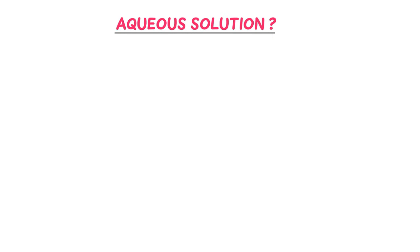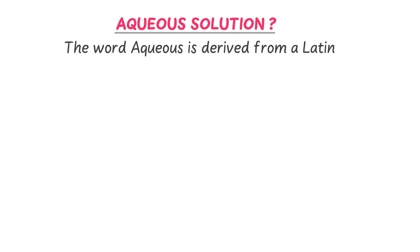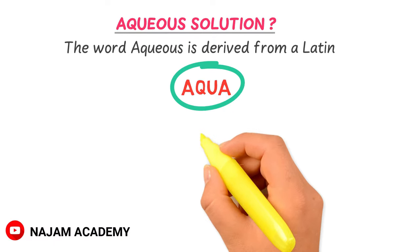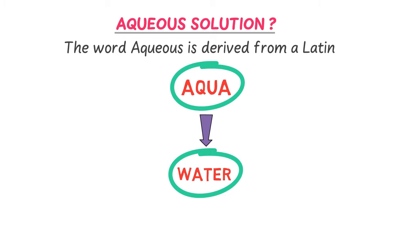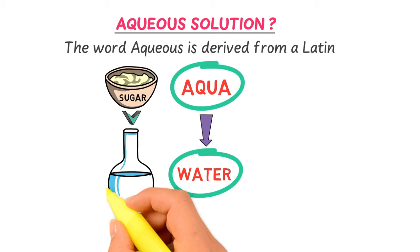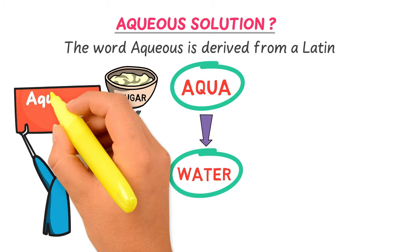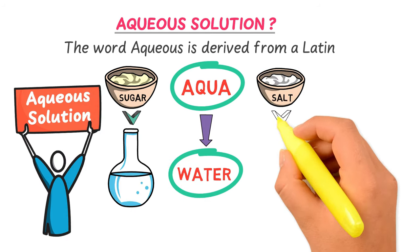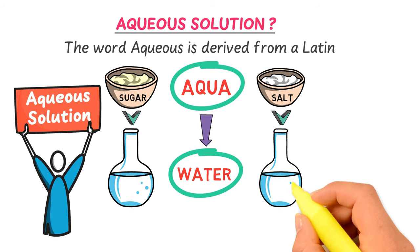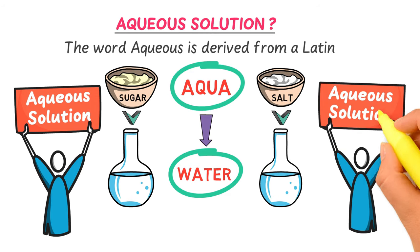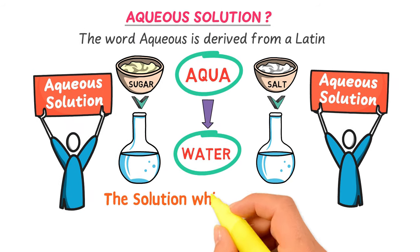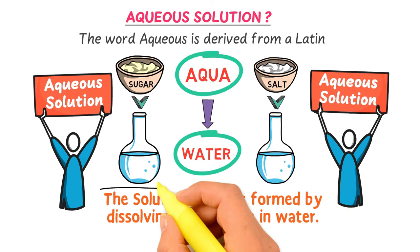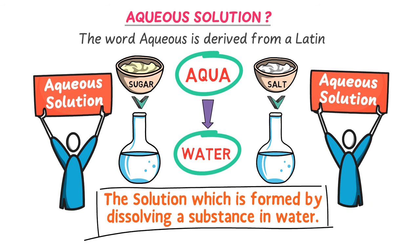Firstly, let me teach you what an aqueous solution is. The word 'aqueous' is derived from the Latin word 'aqua,' meaning water, so aqueous solution means water solution. For example, when you add sugar into water you get an aqueous solution; when you add salt into water, you get an aqueous solution. Therefore, we define aqueous solution as the solution which is formed by dissolving a substance in water.